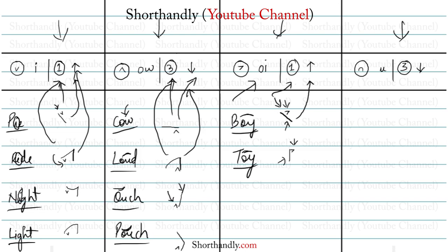Let's take another example: the word 'coil'. We write this word with the outline above the line and the diphthong on the first place. Let's take one more example: the word 'joy' — we have the sound of 'oi', so we write it with the J consonant, the diphthong on the first place, and the outline above the line. Those were the examples for the diphthong 'oi'.